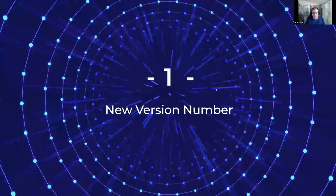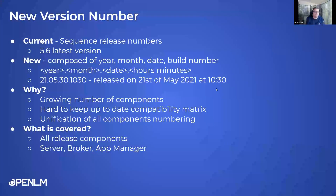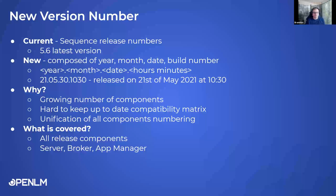The first thing you will probably notice in the new version is the new version numbering system. Currently we were using sequential release numbers — 5.6.3 is actually the latest version right now. The new numbering system will be composed, as you can see here, of year, month, date, and build numbers.